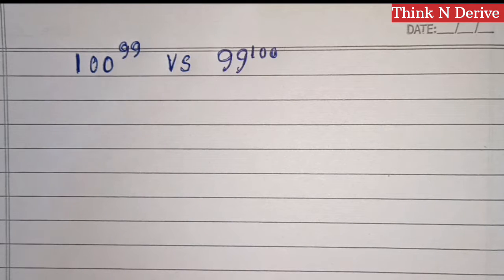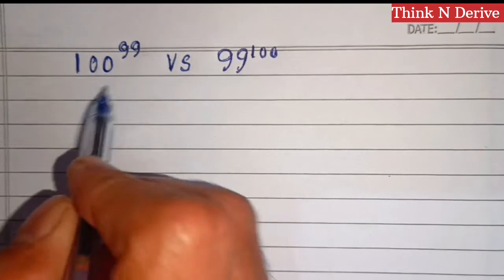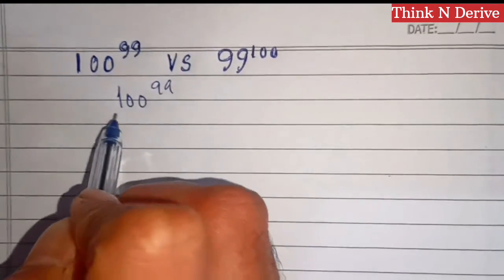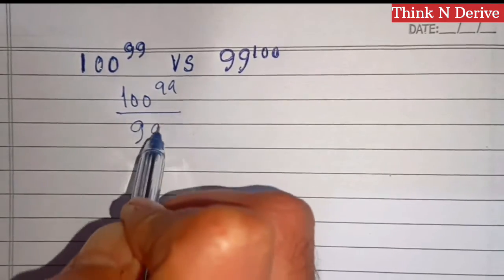Hello, welcome to Think and Derive. In this video, we're going to compare which number is larger: 100^99 or 99^100. First, I will divide these numbers: 100^99 over 99^100.